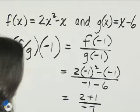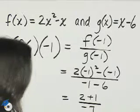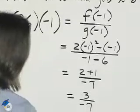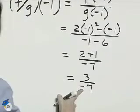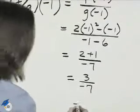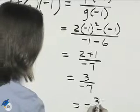We can add 2 plus 1, that's 3. 3 divided by negative 7. We don't leave a negative in the denominator, so we'll write this as negative 3 sevenths.